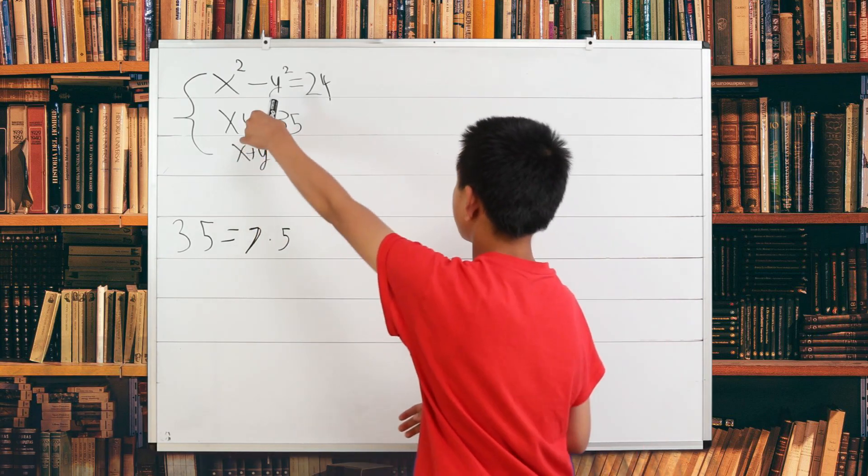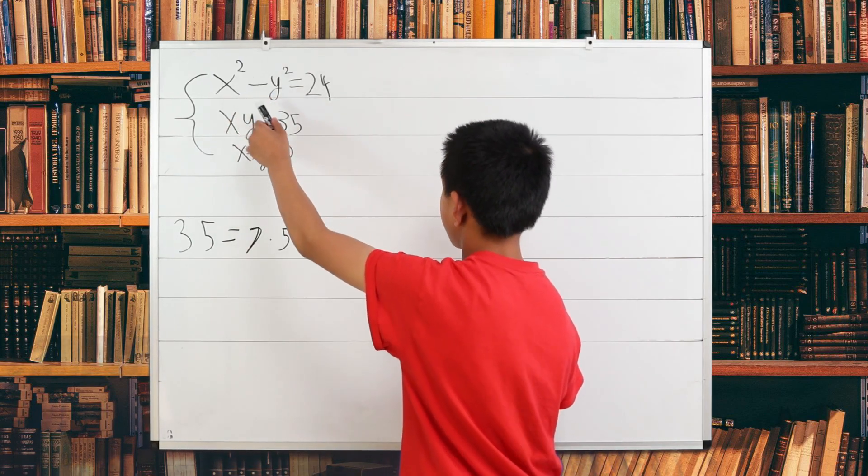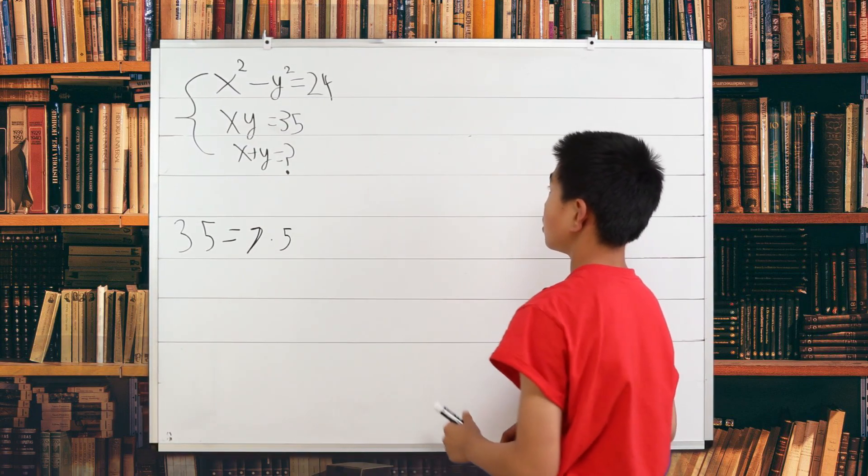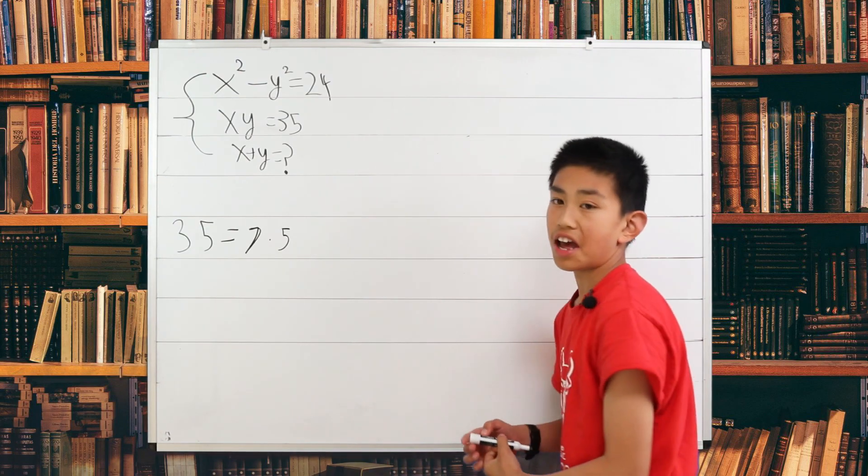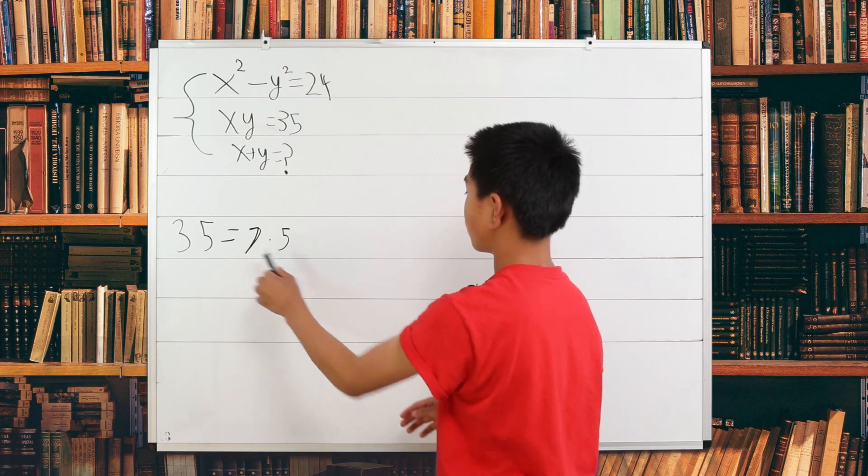And we know which one's which. Because on the first part of this problem, we are given that x squared minus y squared is a value above 0. So we know that x squared is greater than y squared. So x is greater than y. And since these are our two values,